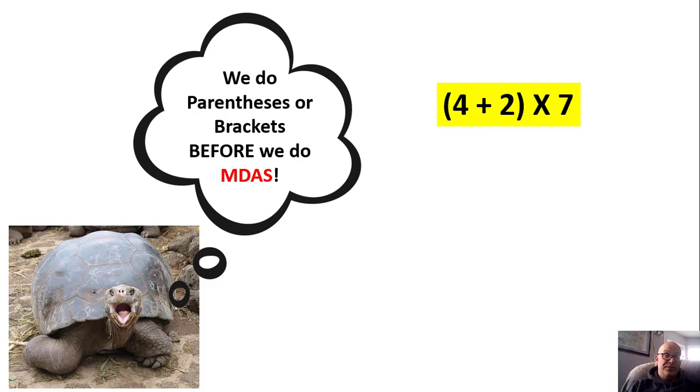But now we have parentheses, so parentheses first. Four plus two, and only after, times seven, right? Four plus two equals six. Copy down the seven. Six times seven is 42.